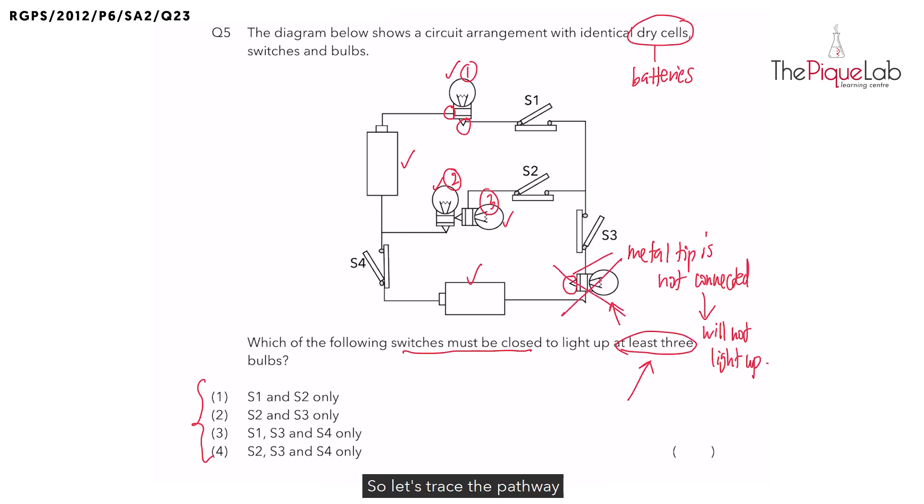So let's trace the pathway that electricity must flow through the remaining three bulbs so that all three will light up. The pathway that I am tracing now is the only possible pathway for all these three bulbs to light up. Now look at which switches are found in this pathway.